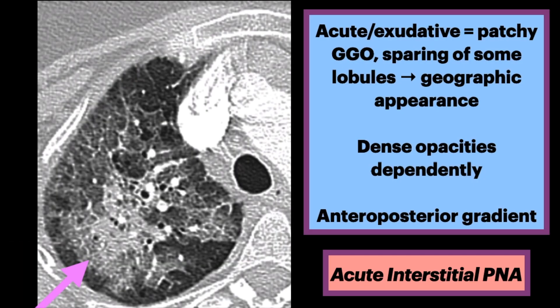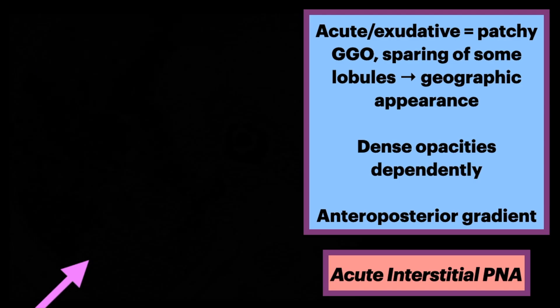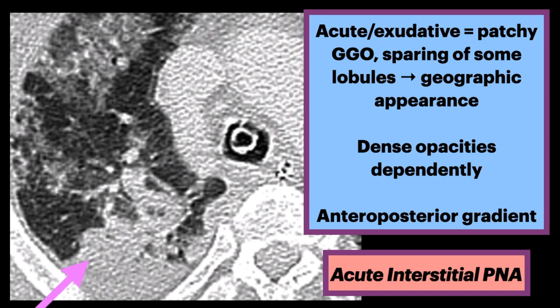In the acute phase, patchy ground glass opacities are seen, often with some sparing of individual lobules, producing a geographic appearance. There is dense opacification in the dependent lung, producing an anteroposterior gradient.